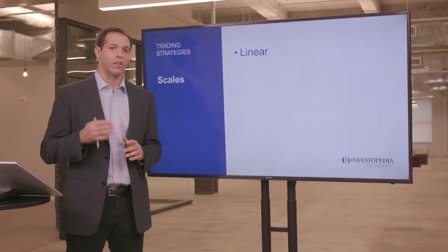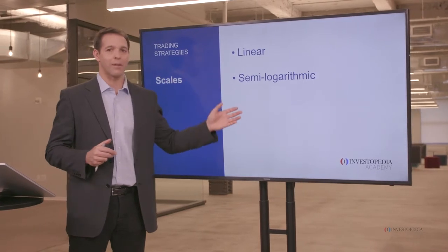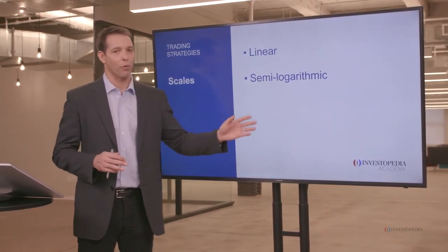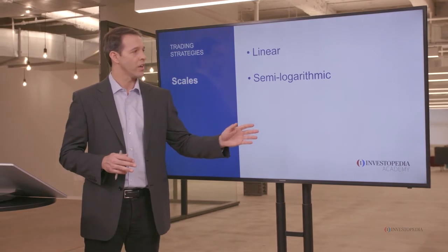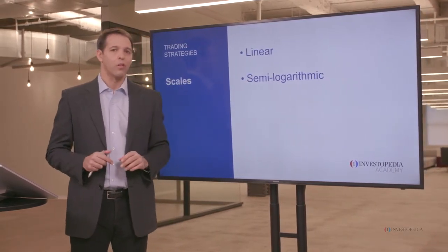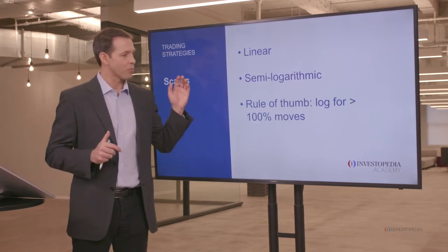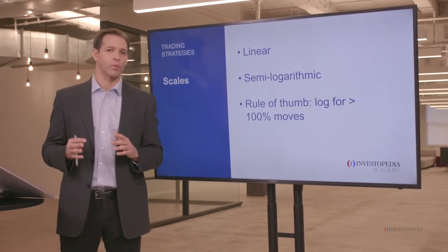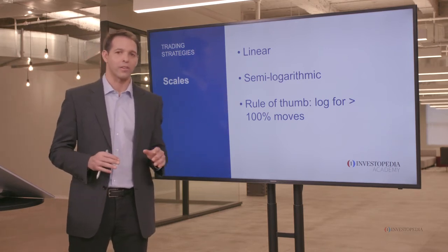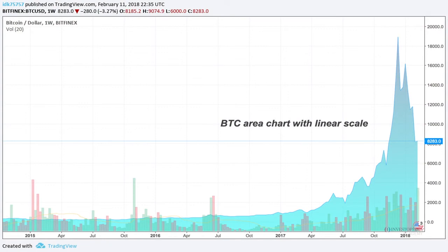The second type of chart that you want to use in the crypto markets is known as the semi-logarithmic. What this does is it's going to show you a percent price change that's the same all the way up on the y-axis, and I'll demonstrate it in a second. The rule of thumb I use for crypto markets is if there's a price that moves over a hundred percent, I want to use a semi-log chart to identify that price. Let's take a look at a few charts to see how this works in practice.